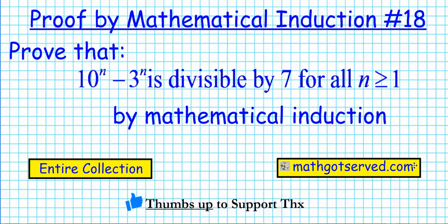Good day students, welcome to mat.serv.com. In this clip we're going to be going over our proof by mathematical induction number 18, which is to show that the statement 10 to the n minus 3 to the n is divisible by 7 for all positive integers. If you find this presentation helpful, please give us a thumbs up. All right, let's go ahead and get started with the proof.